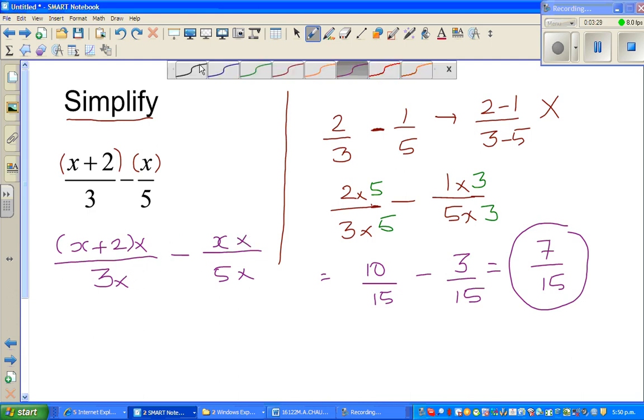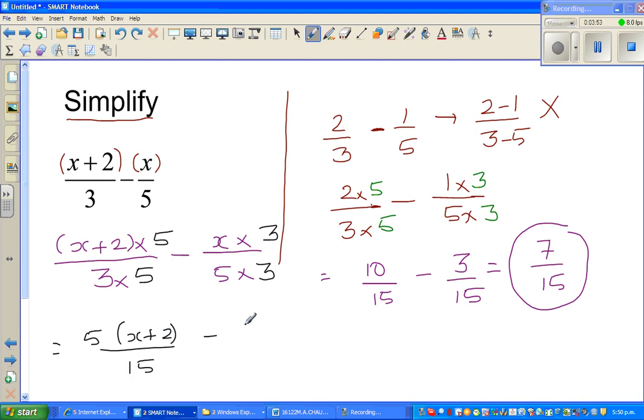As we saw, you have to multiply by 5 here, so you have to also multiply this with 5. So you have to multiply this with 3 and this with also 3. This becomes 5 times x plus 2 over 15 minus 3x over 15.